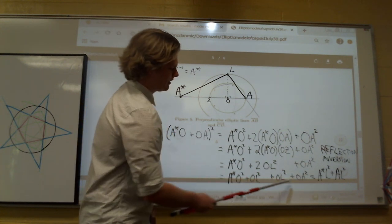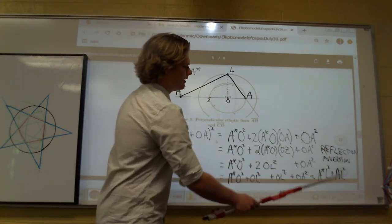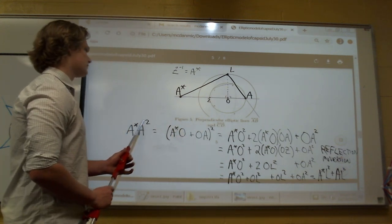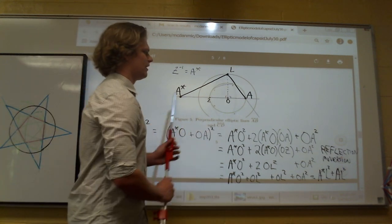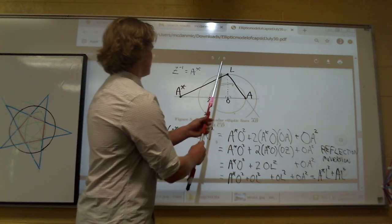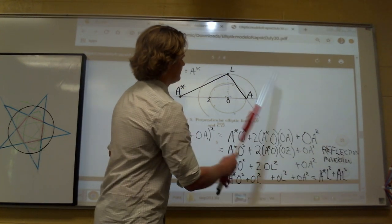With Pythagorean theorem, we can say A*O squared plus OL squared equals A*L squared. And we can do this by Pythagorean theorem: OL squared plus OA squared equals AL squared. Now we have A*A squared, which is right here, the hypotenuse, equals A*L squared, right here, a side, plus AL squared, right here.